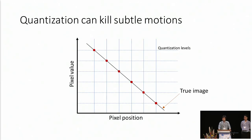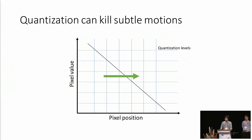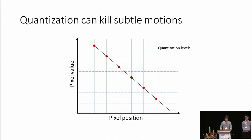To understand why quantization can kill subtle motion: videos are usually encoded with 8-bit quantization. Consider a linear image — if we move this image slightly to the right and resample, the resampled value won't quite fall on a quantization level, and when converted to integer it gets rounded down to the same level, resulting in no motion at all. To remedy this, we quantize by randomly rounding values with probability according to the residue value. This helps us capture sub-pixel motion more accurately.